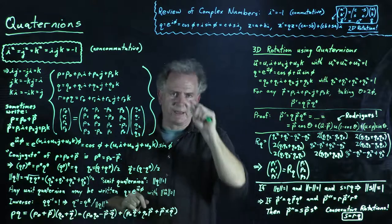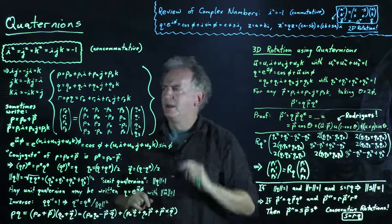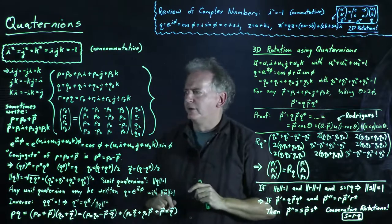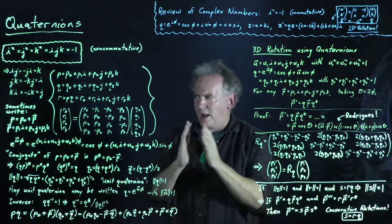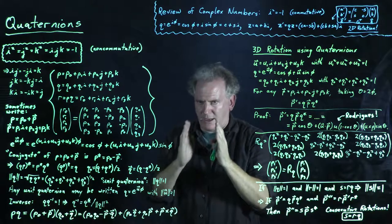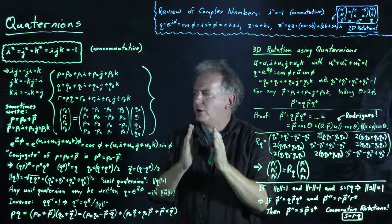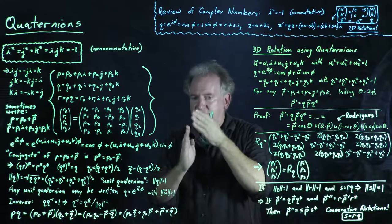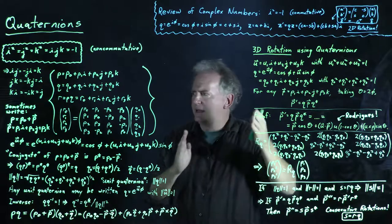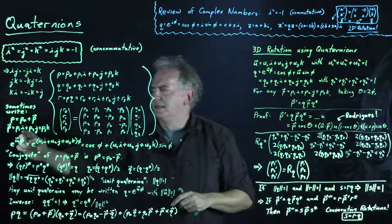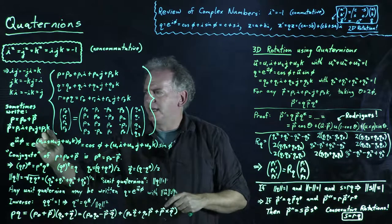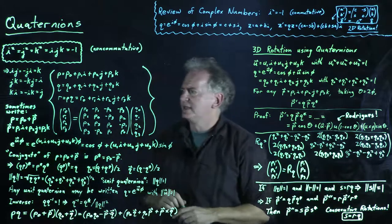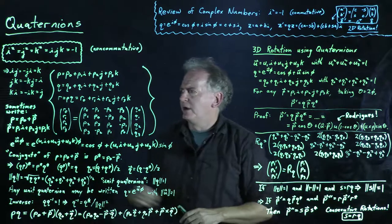We will sometimes find it convenient to rewrite a quaternion in terms of its real component plus its component in the three imaginary directions, which we denote with the vec symbol. For instance, p = p₀ + p⃗, where p⃗ has components in the i, j, and k directions. This vec notation is special to quaternions — we only use it when referring to a component with elements in the i, j, and k directions.